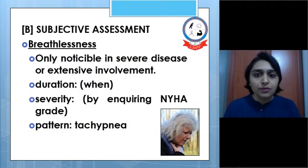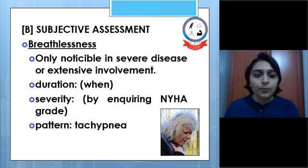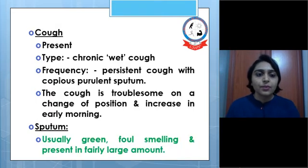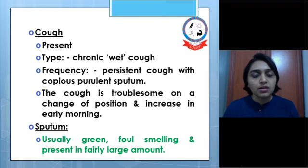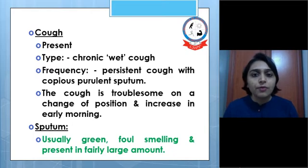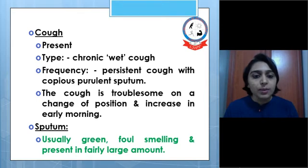Subjective assessment includes breathlessness, which is only noticeable in severe disease or extensive involvement. Duration and severity should be asked of the patient; the patient usually has tachypnea during breathlessness. The cough present is a chronic wet cough, with a persistent cough producing copious purulent sputum — a very important feature of bronchiectasis. The cough is troublesome on a change of position and increases in the early morning.